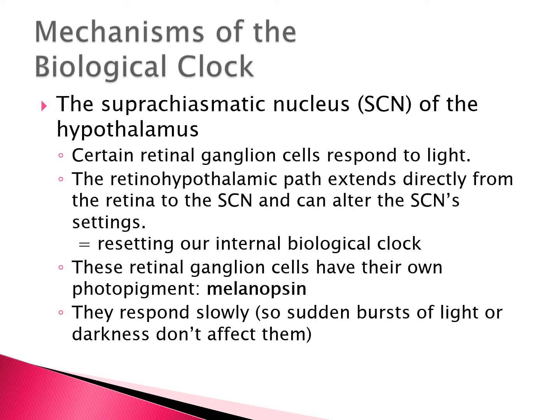Certain retinal ganglion cells respond to light and send their information to the suprachiasmatic nucleus of the hypothalamus along what's called the retinohypothalamic pathway — named for where it starts, in the retina, and where it ends, at the hypothalamus. This pathway goes directly to the suprachiasmatic nucleus so that light can help us reset our internal biological clock.